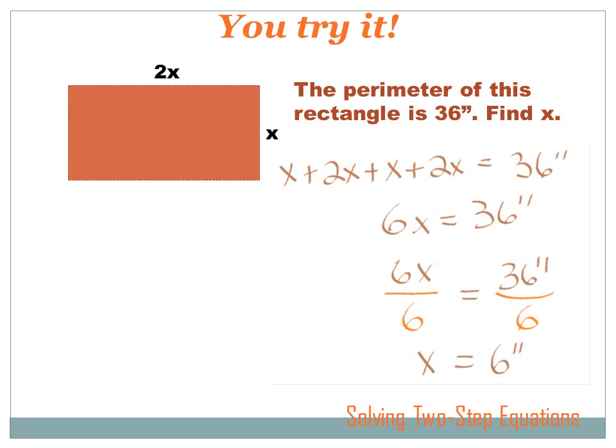So now I've got 6X divided by 6, which is just X. And I've got 36 inches divided by 6, which is 6 inches. So, we know that this dimension is 6 inches. What's that dimension? 12 inches!